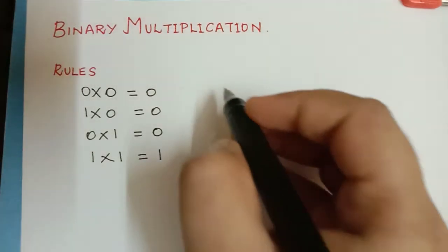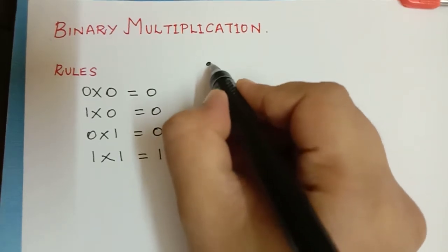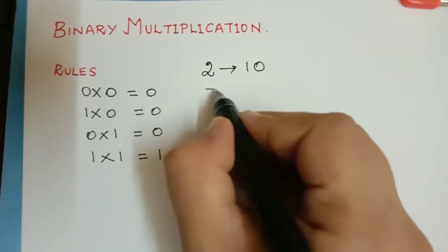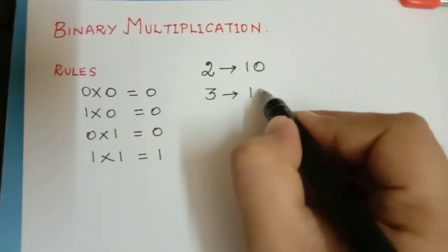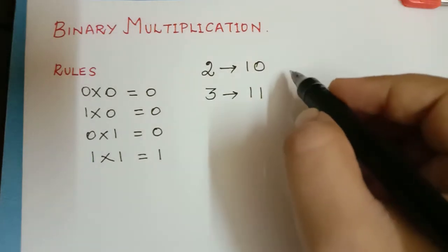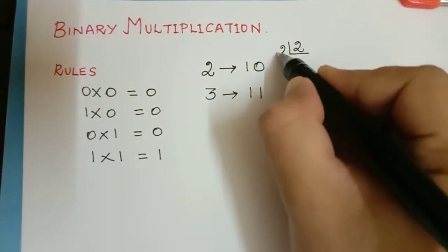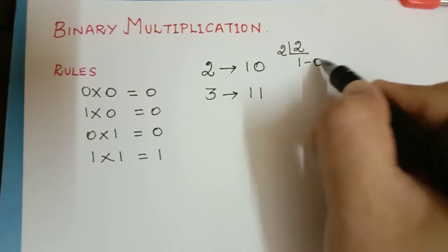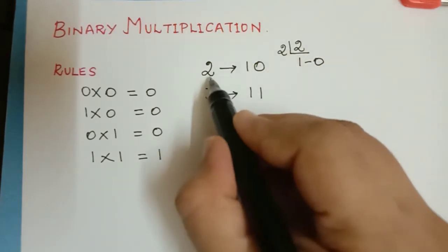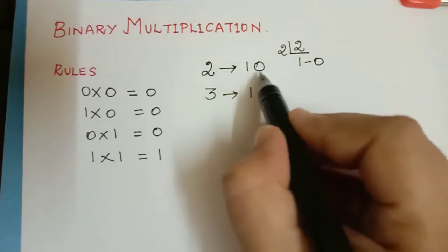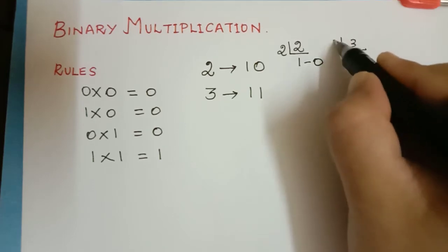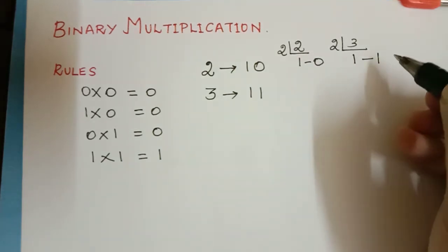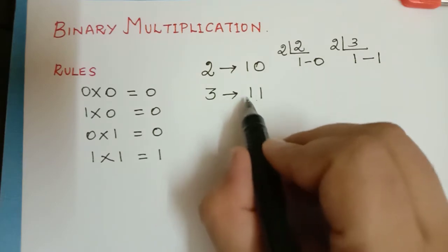We have already seen that the binary representation of the decimal number 2 is 1,0 and the binary representation of 3 is 1,1. The reason is, when you divide 2 by 2, we get 1 times 2 with remainder 0, so the binary number for 2 is 1,0. Similarly for 3, when you divide 3 by 2, it is 1 times 2 with remainder 1, so the binary representation of decimal 3 is 1,1.